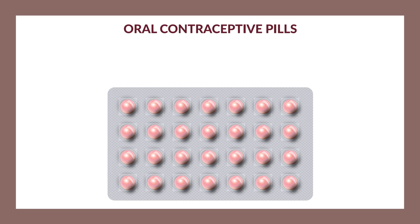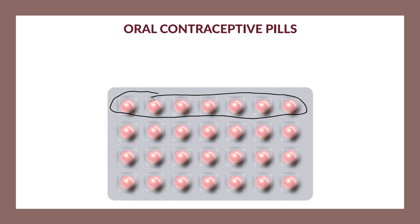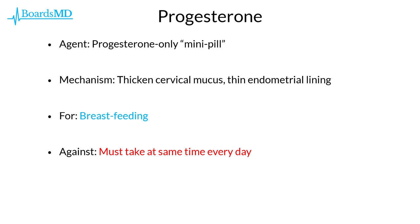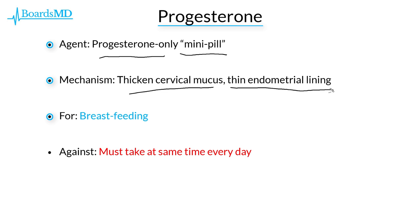We have a schematic here of how oral contraceptive pills are normally packaged — seven pills per row — to help patients be compliant and take them each day at the same time, since failure to do so can render them ineffective. In addition to combined hormonal contraceptives, we also have the progesterone-only mini pill, which works via a progesterone-mediated mechanism by thickening cervical mucus and thinning the endometrial lining.